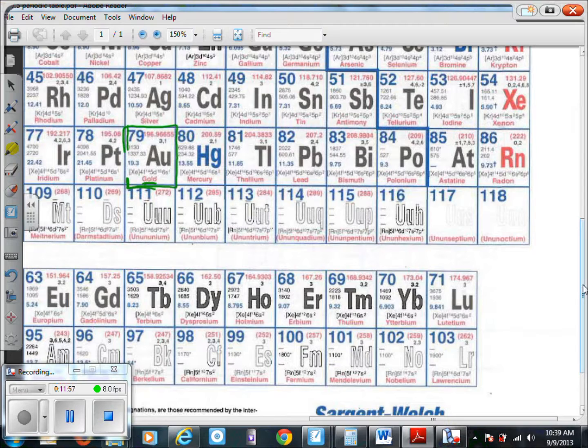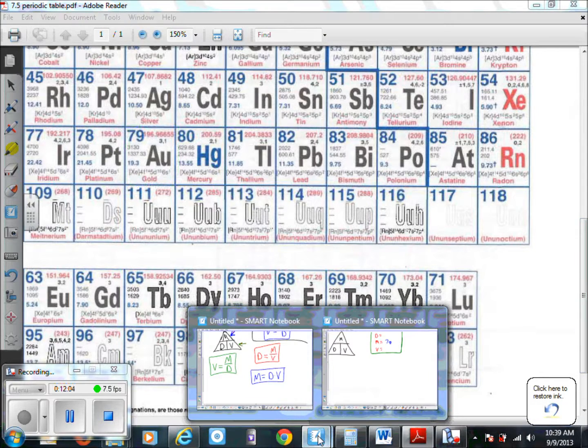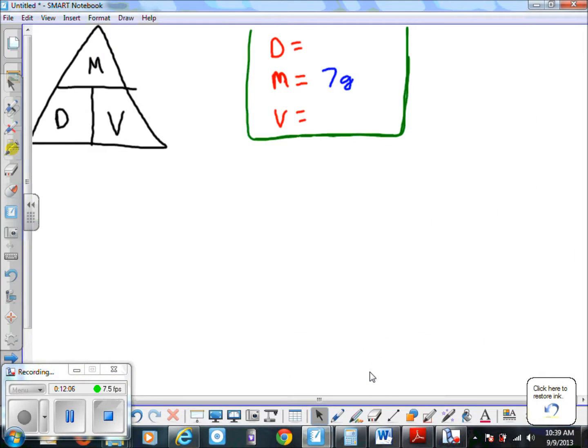So we go back to our assignment here and we'll put in our density. Gold has 19.3 grams for every cubic centimeter. Keep in mind a cubic centimeter is a little bit smaller than a dice or one die. We're trying to figure out the volume here.